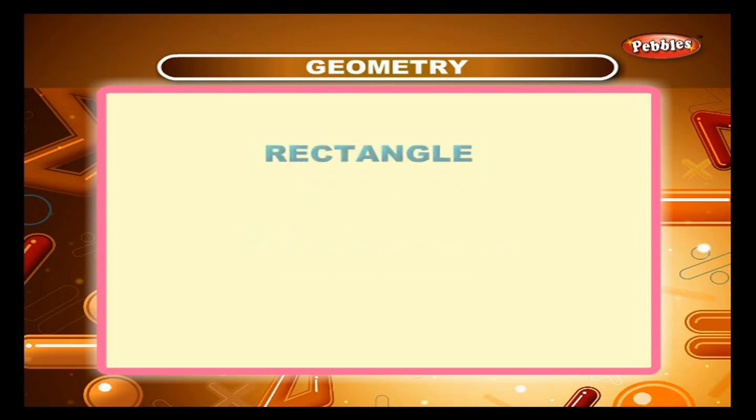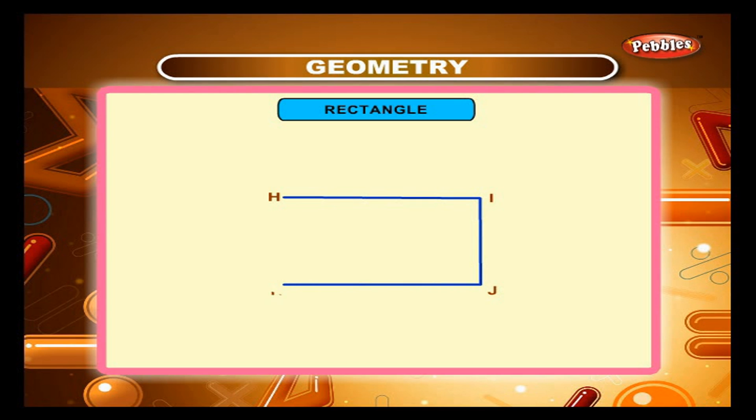Rectangle. A quadrilateral in which all angles measure 90 degree is called a rectangle. HIJK is a rectangle. Thus, in a rectangle the opposite sides are equal and all angles are right angles.